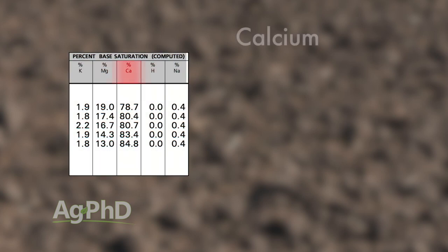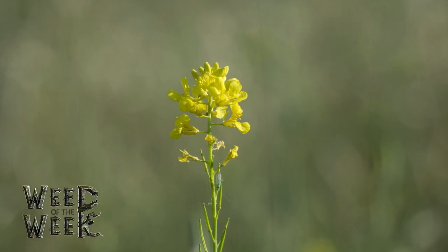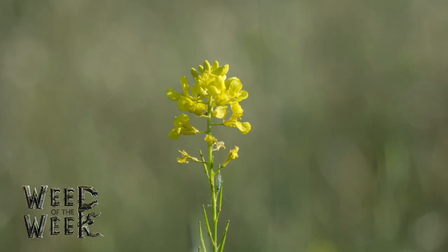The base saturation test on a soil test is incredibly important information to have. Wherever you get your soil testing done, make sure you request that a base saturation test gets done as well. It's the measurement of five different nutrients against each other — just a percentage that should always add up to 100%. You're looking at calcium, magnesium, hydrogen, sodium, and potassium.